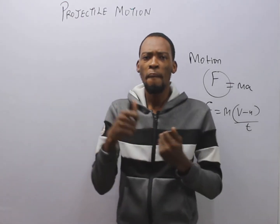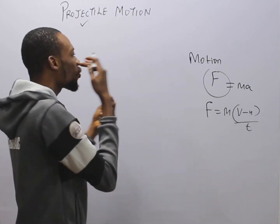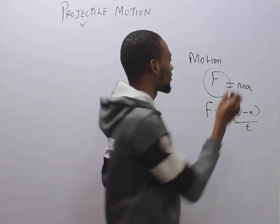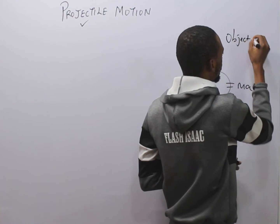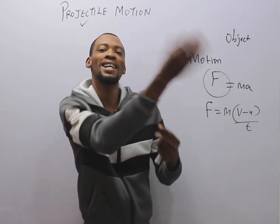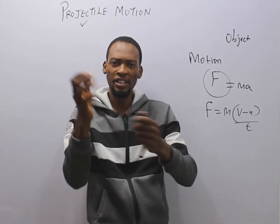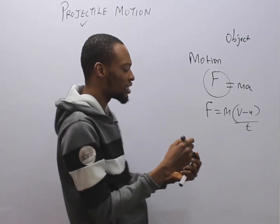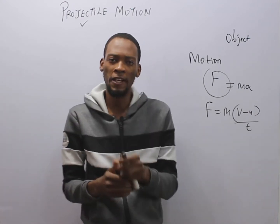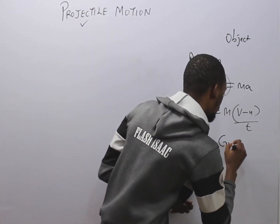Now, projectile motion. Before we talk about projectile motion, what is a projectile? A projectile is simply any object that is launched, kicked, thrown, or projected and allowed to fall freely under gravity. When you throw an object freely and allow it to fall under gravity, that object is referred to as a projectile. So the only force that acts on a projectile is the force of gravity.